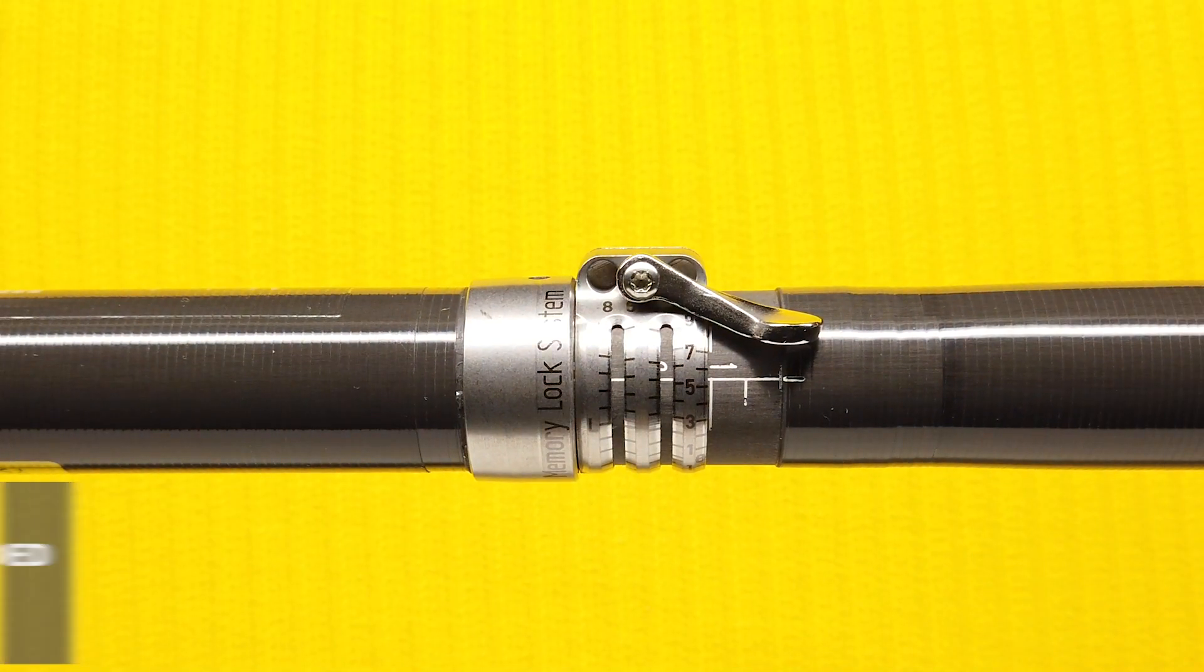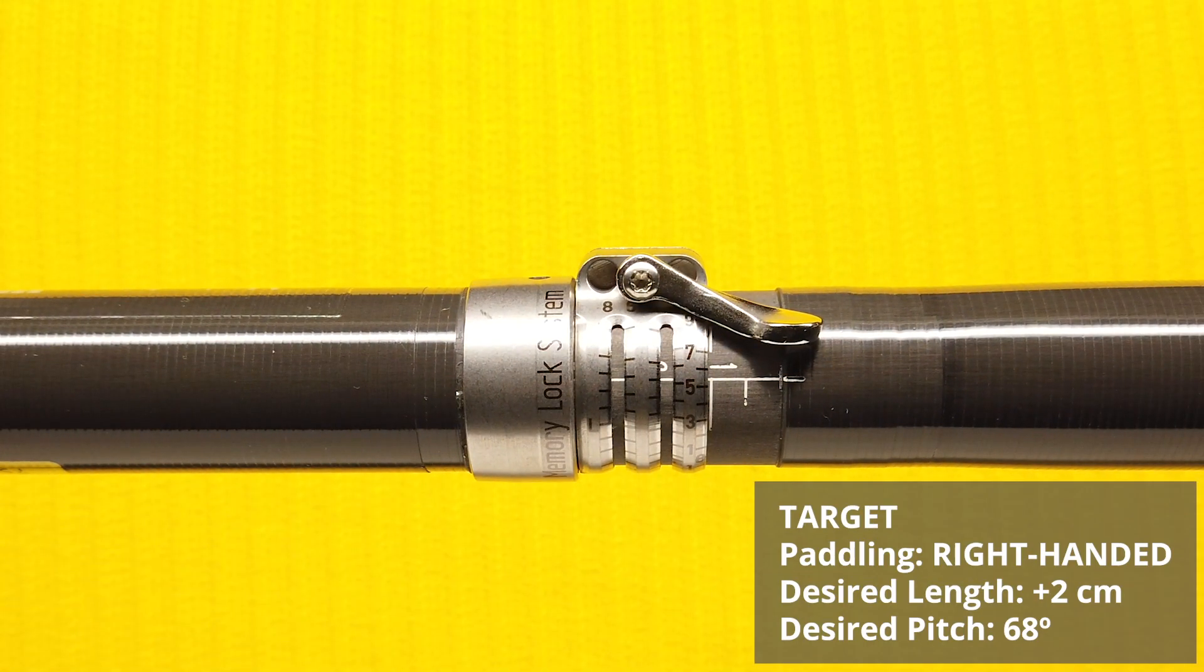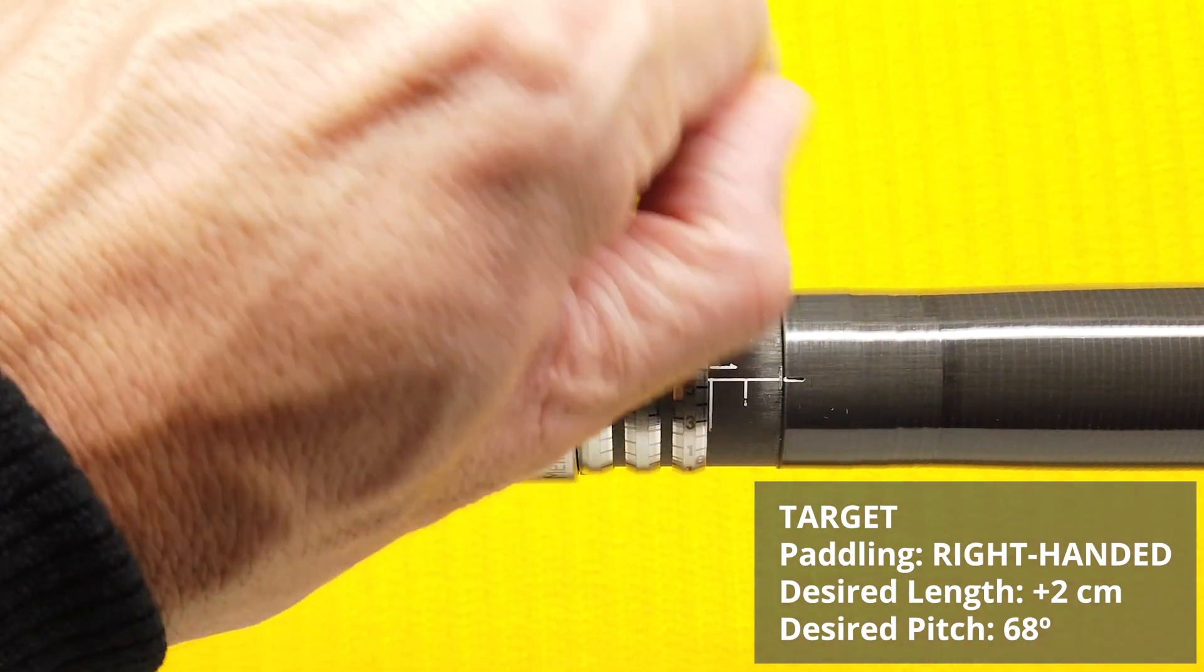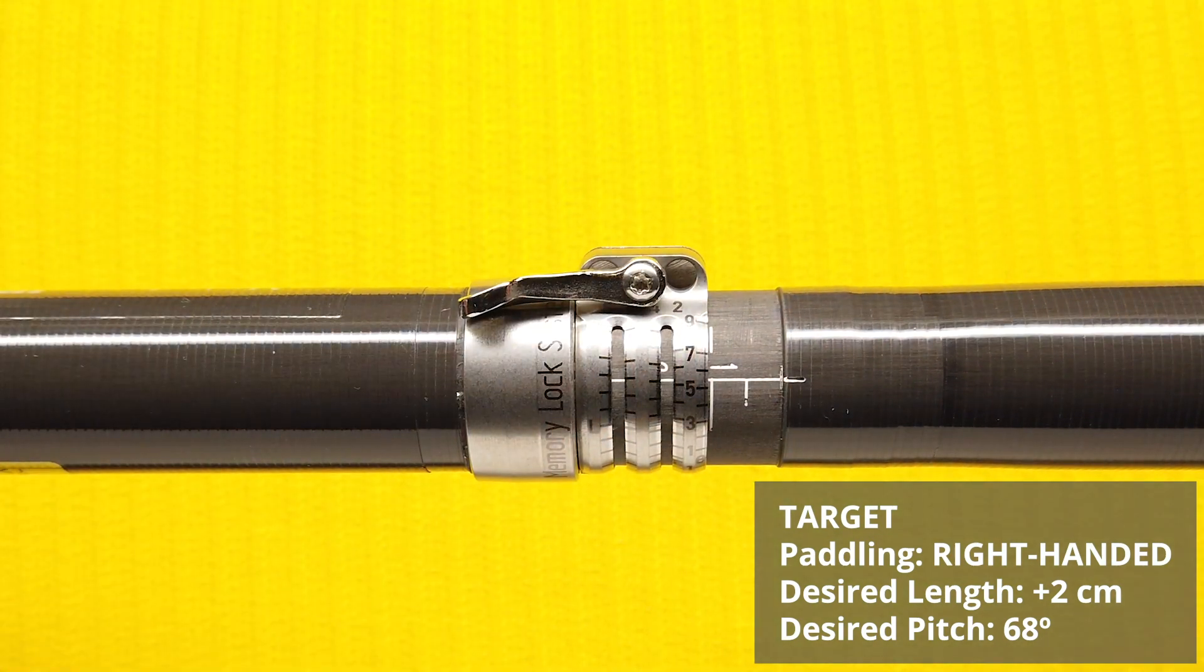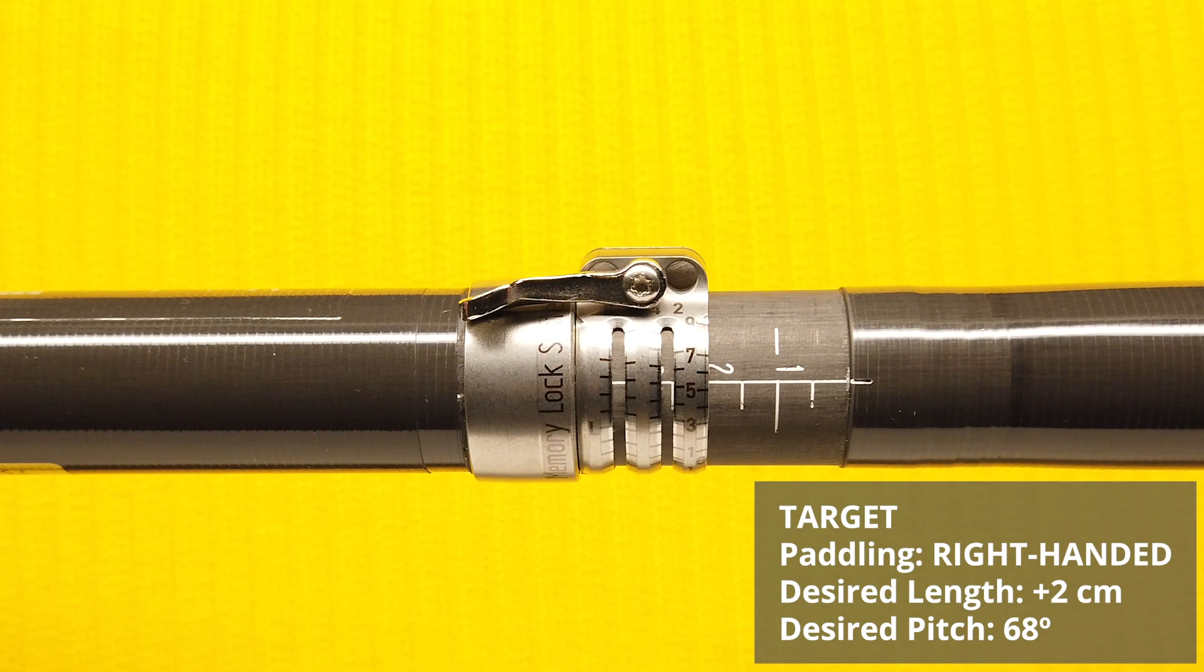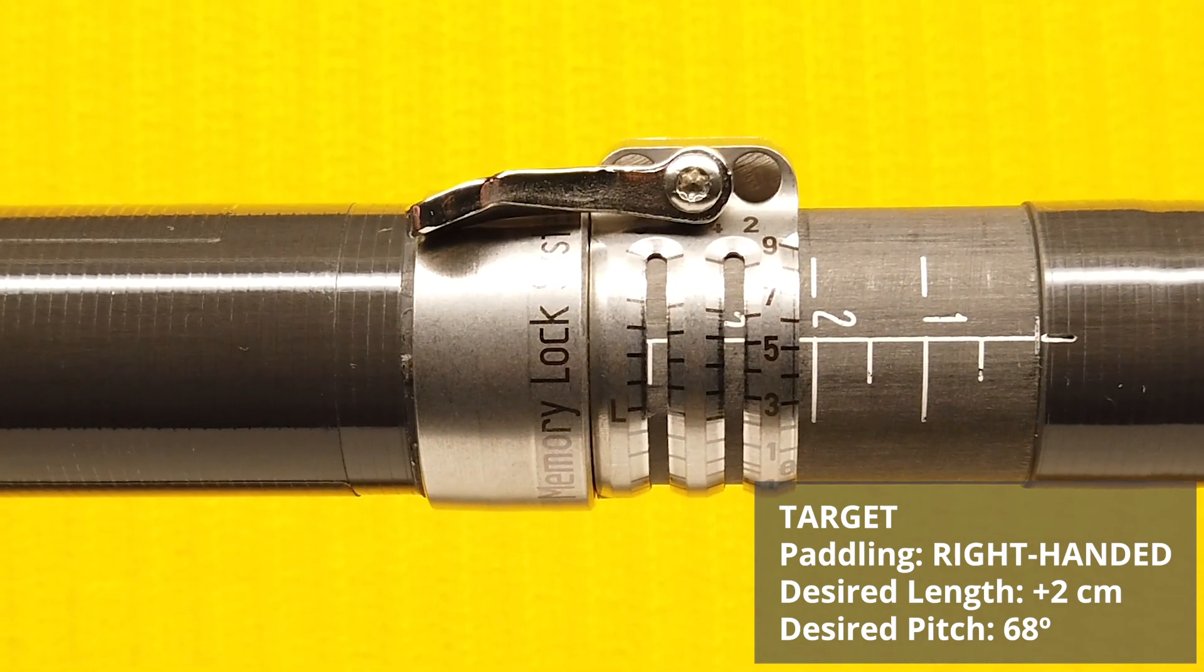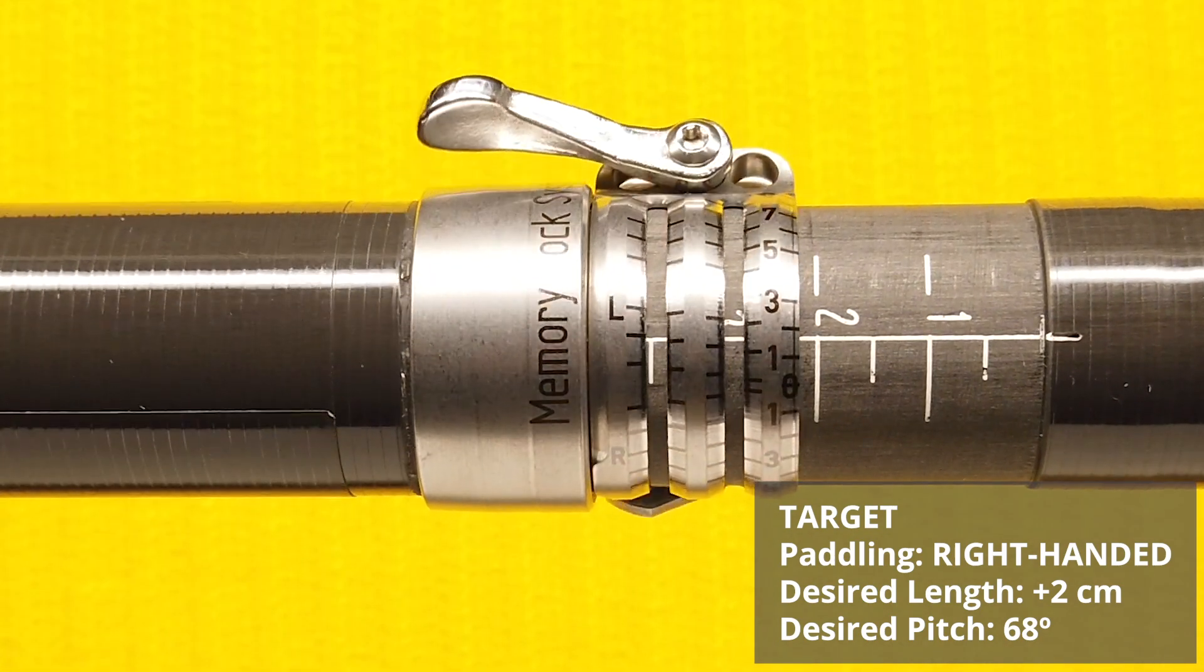This time, let's say I'm a right-handed paddler and I want my shaft 2cm longer with my pitch at 68 degrees. So again, I loosen the latch, pull the shaft 2cm out, bring my pitch back to the 0 mark.